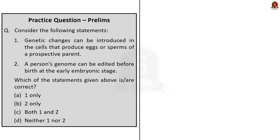Question 4 gives two statements. Statement 1: Genetic changes can be introduced in the cells that produce eggs or sperm of prospective parents — this is correct; it refers to germline gene therapy. Statement 2: A person's genome can be edited before birth at the early embryonic stage — this is also correct; it is one of the major applications of gene therapy. So both statements are correct, and the correct answer is option C: both one and two.